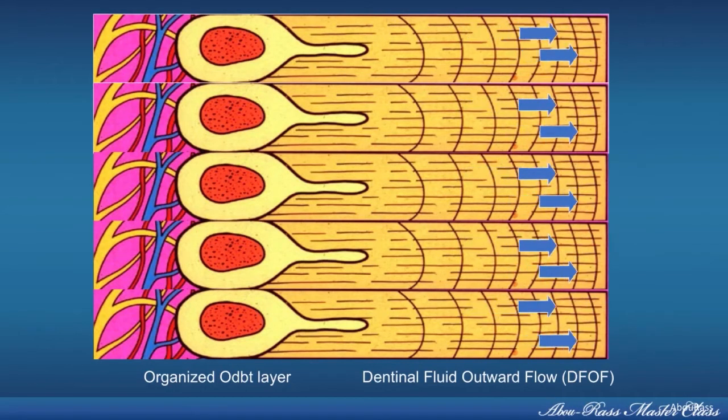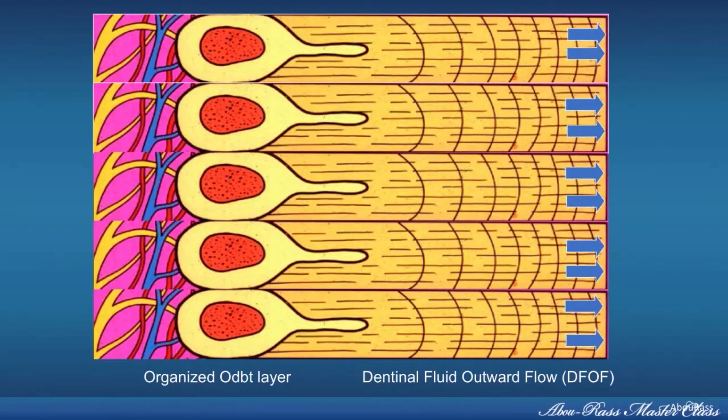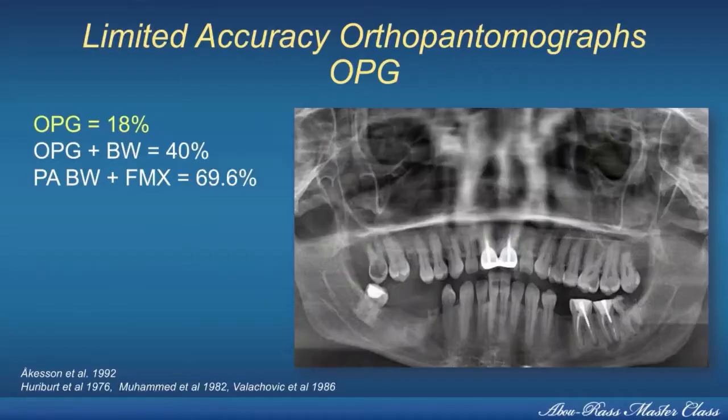It is essential for you to understand the mechanism of pulpal sensibility. Another very important area is the technical and biological limitations of radiology, both intraoral and extraoral. In endodontics, periodontics, and restorative dentistry, the worst radiograph to use is the OPG.